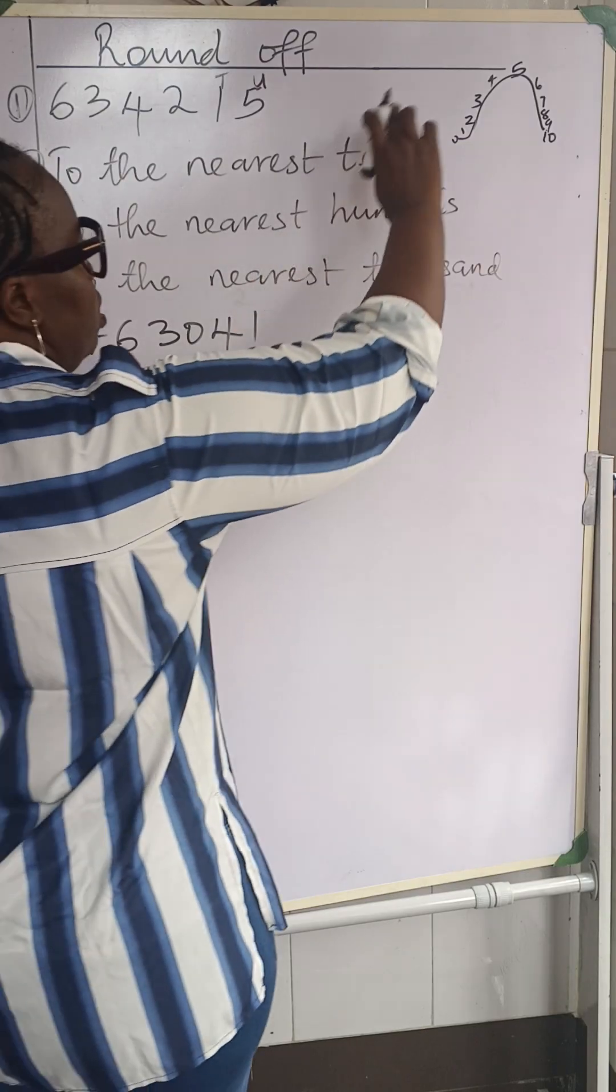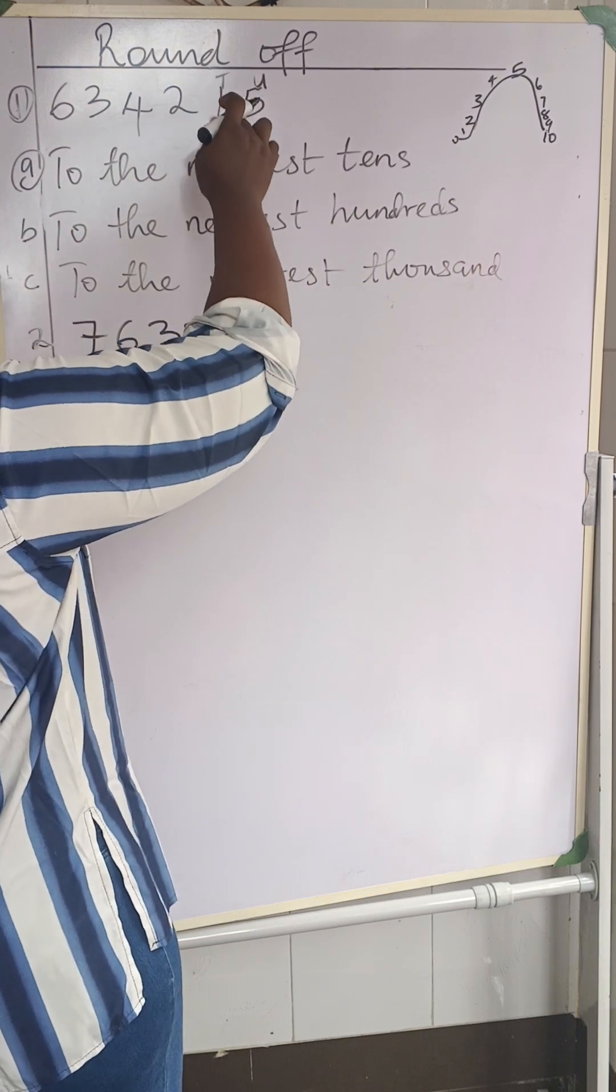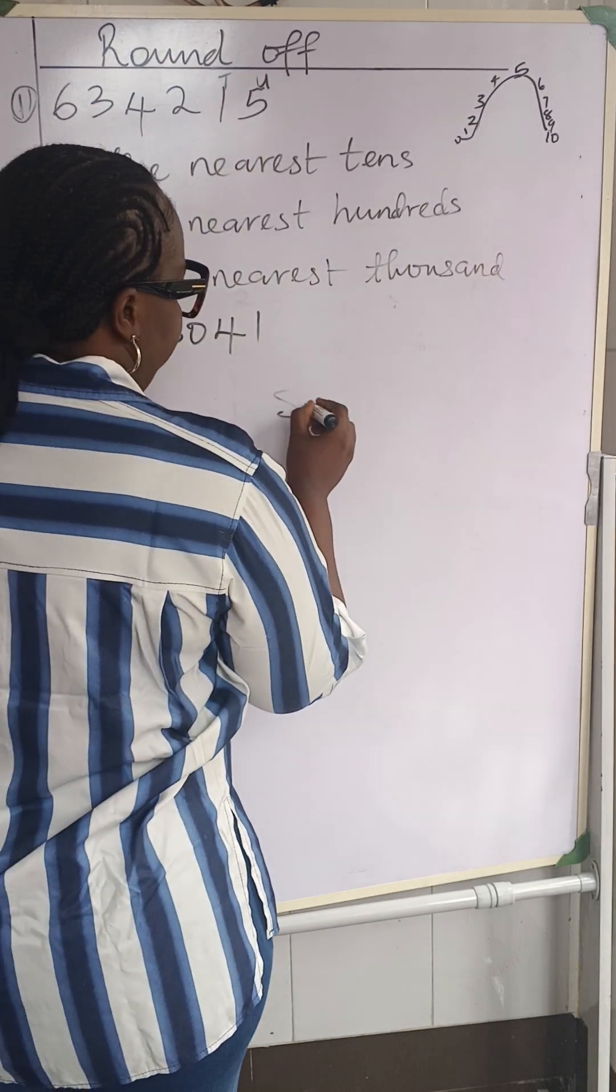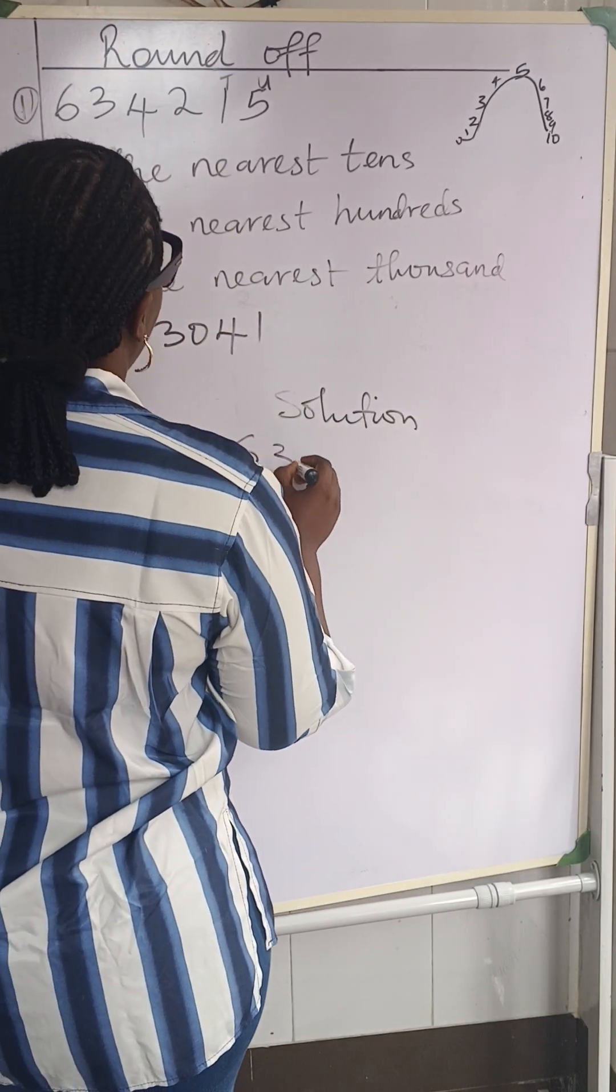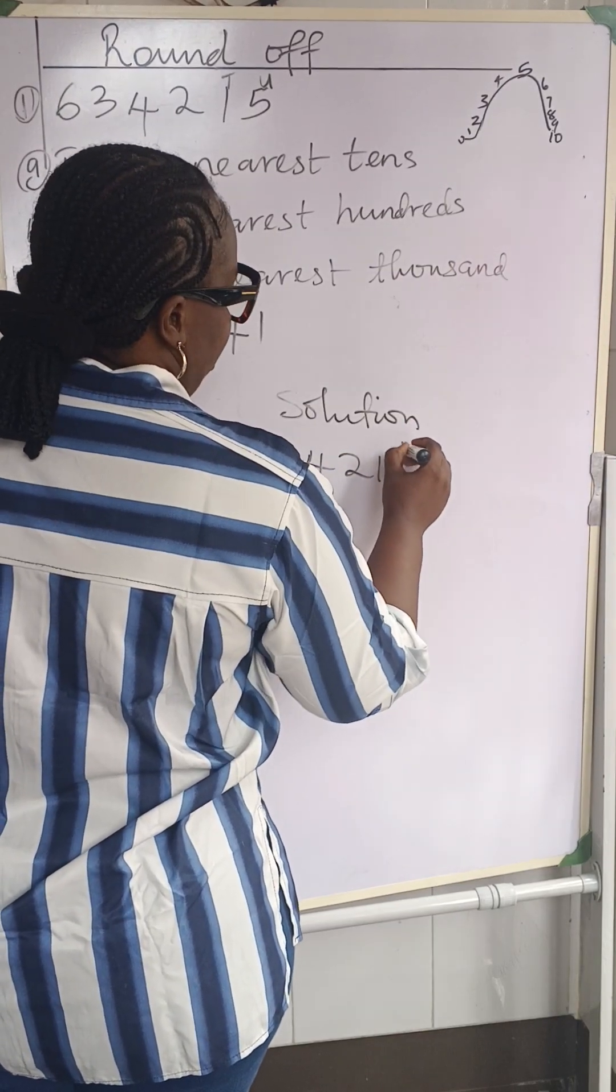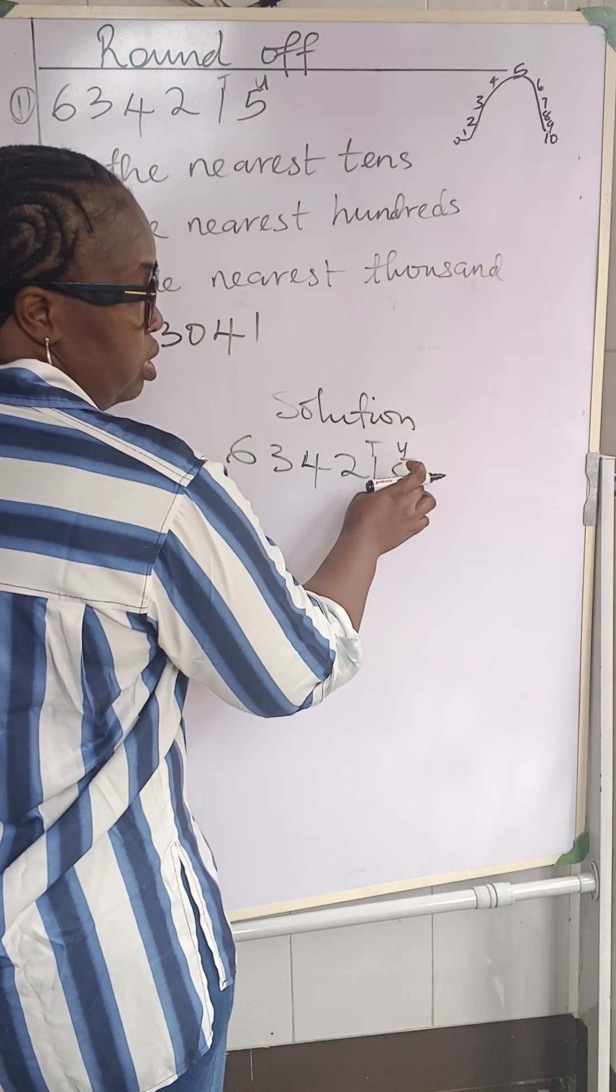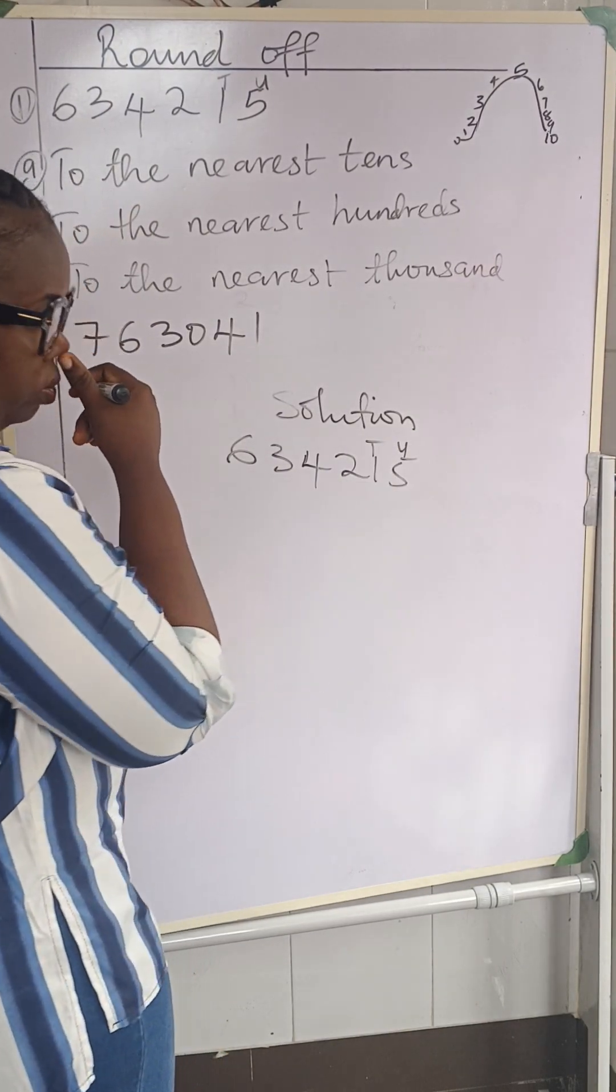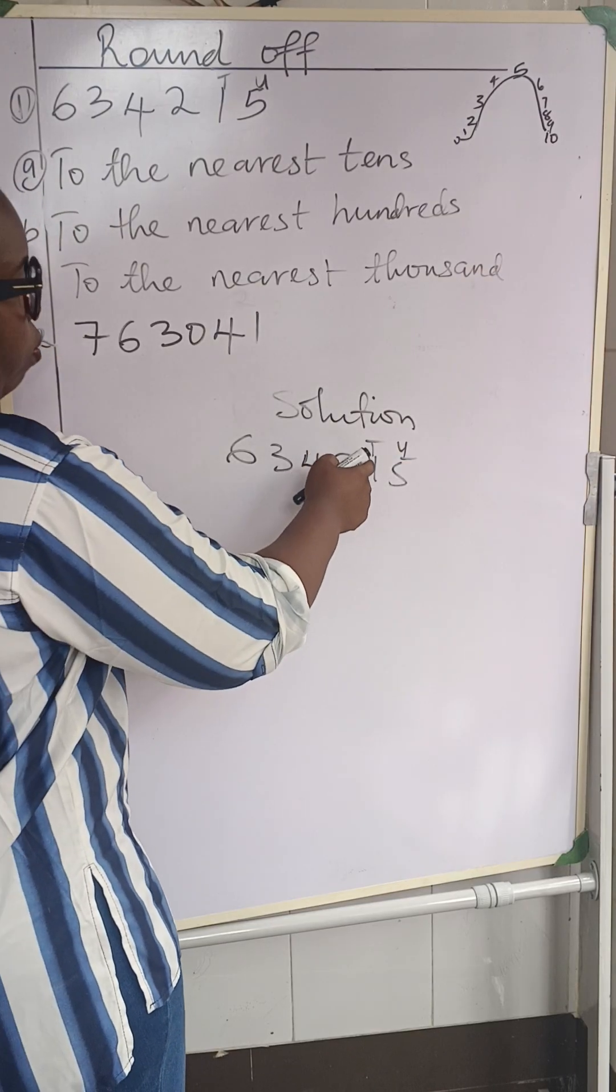If it is up to 5, what do we do? It goes up to 10, right? So we have plus 1 here. That means, let's do the solution and bring it down here. So you see what I mean? We'll have 634,215, and I have units and tens here. Since this 5 is up to, the unit is up to 5, what do we do? We add 1 to this 1.